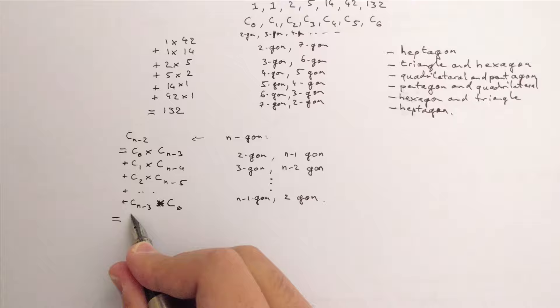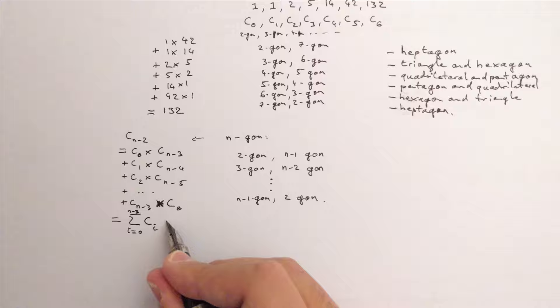If you like fancier notation, that's the sum for i ranging from 0 to n-3 of the c_i c_{n-3-i}.